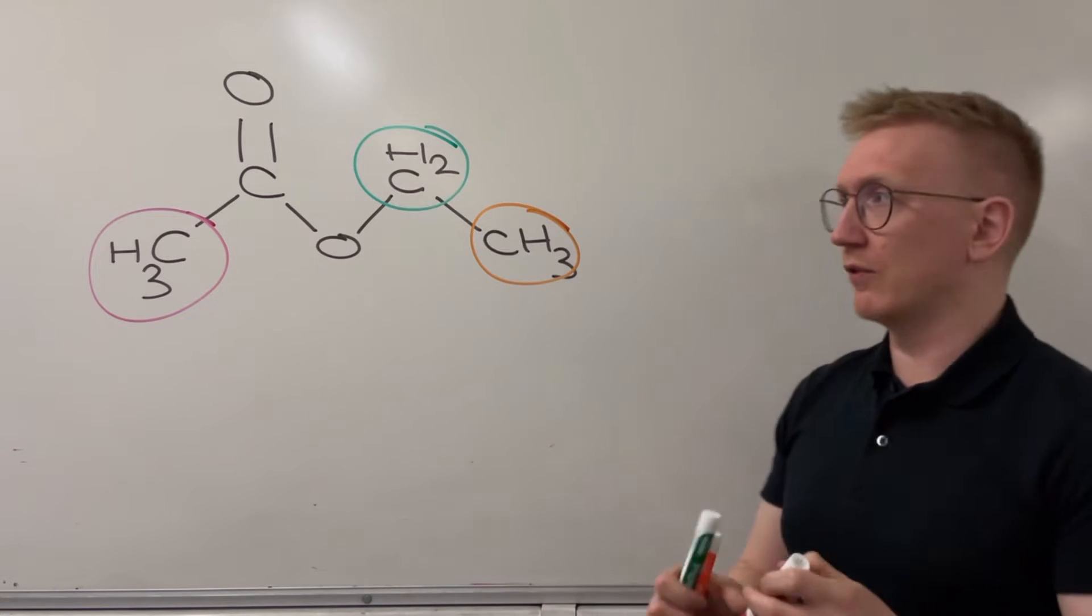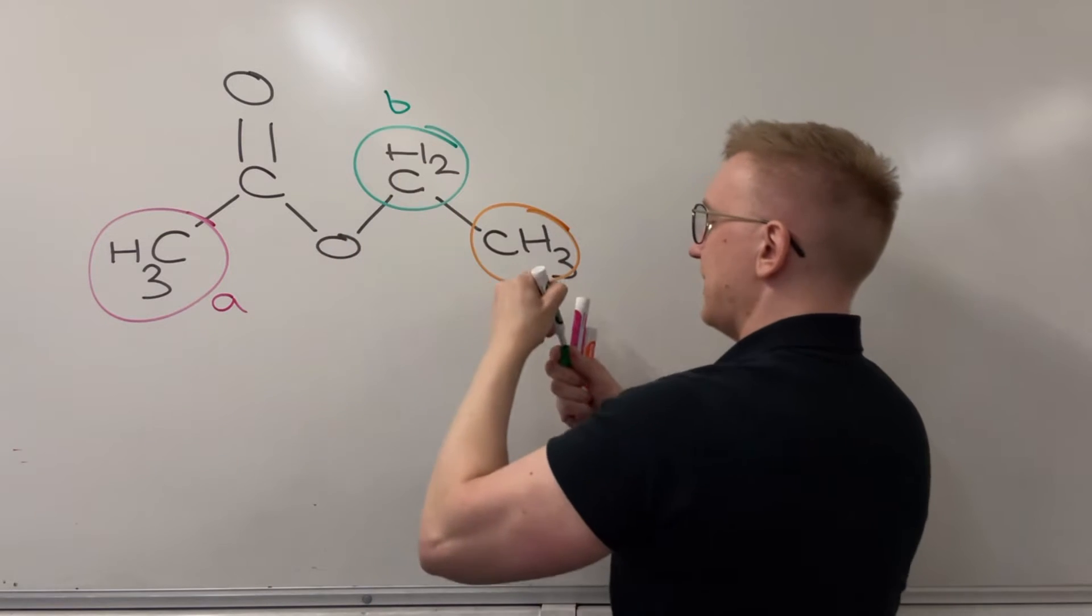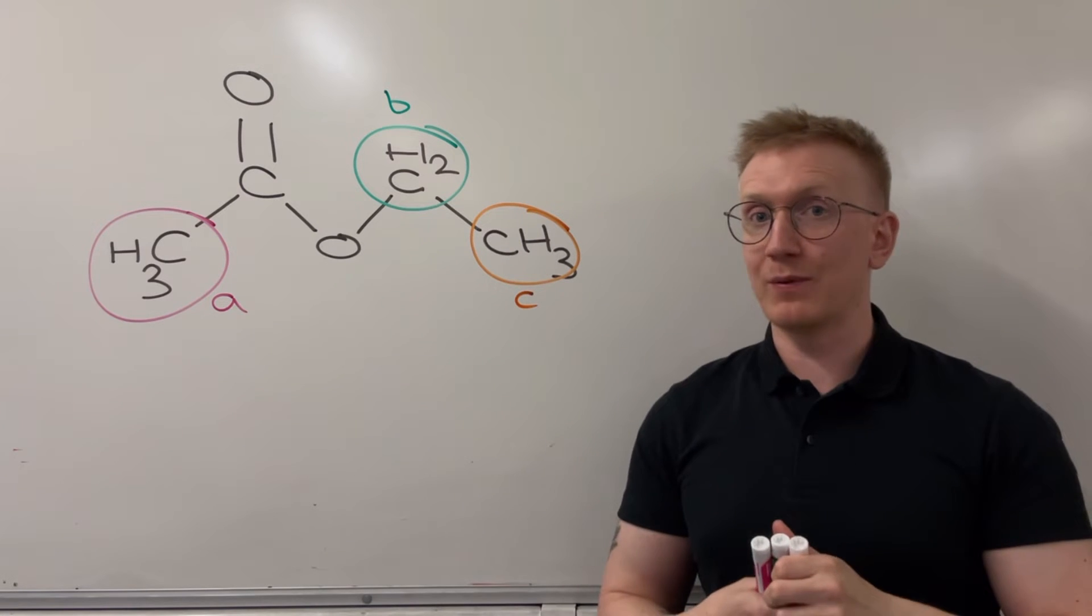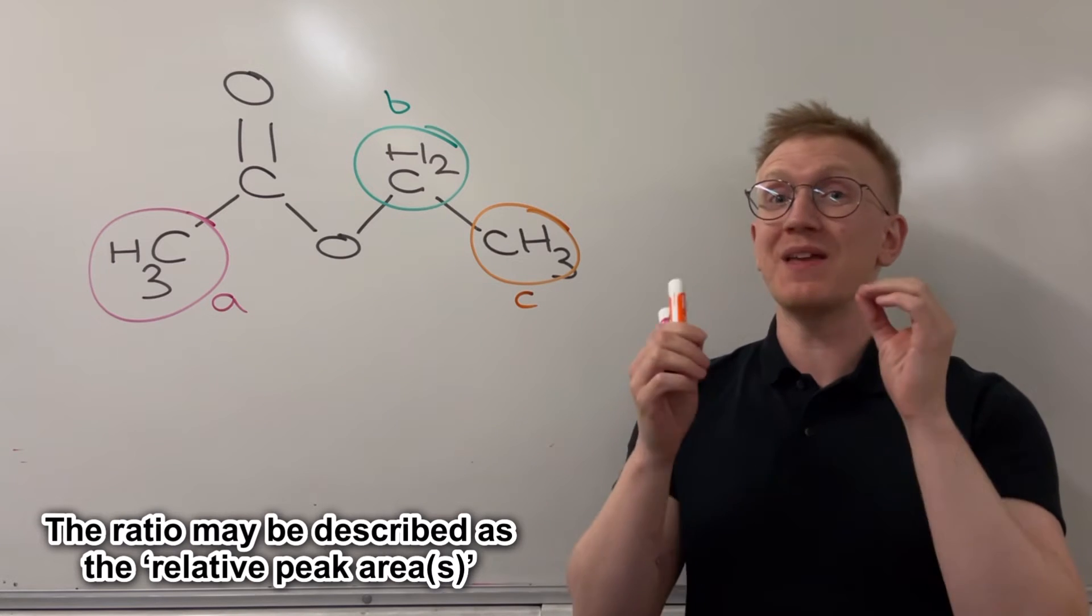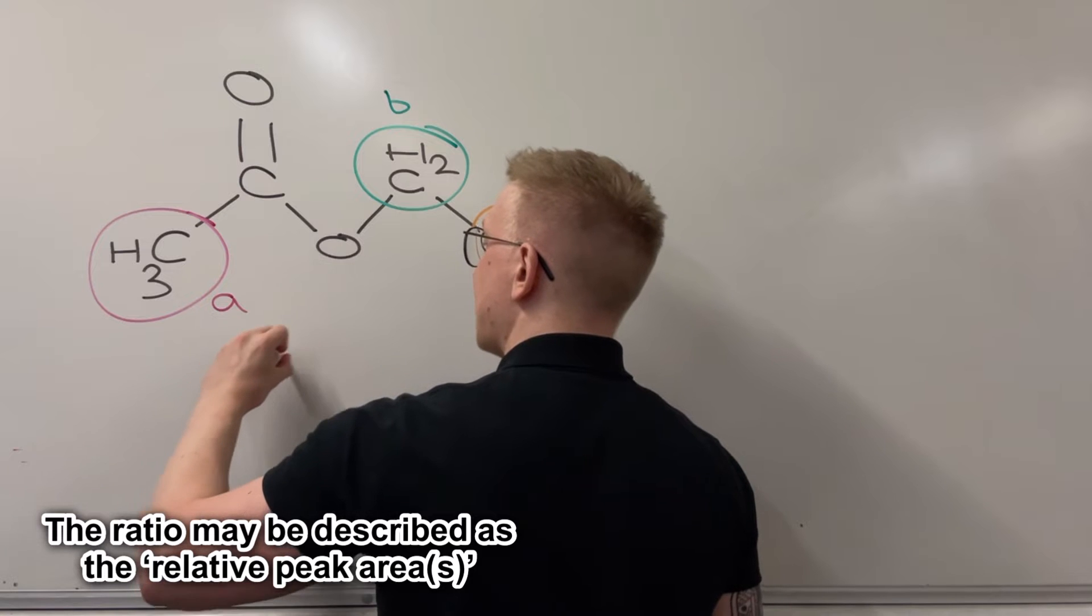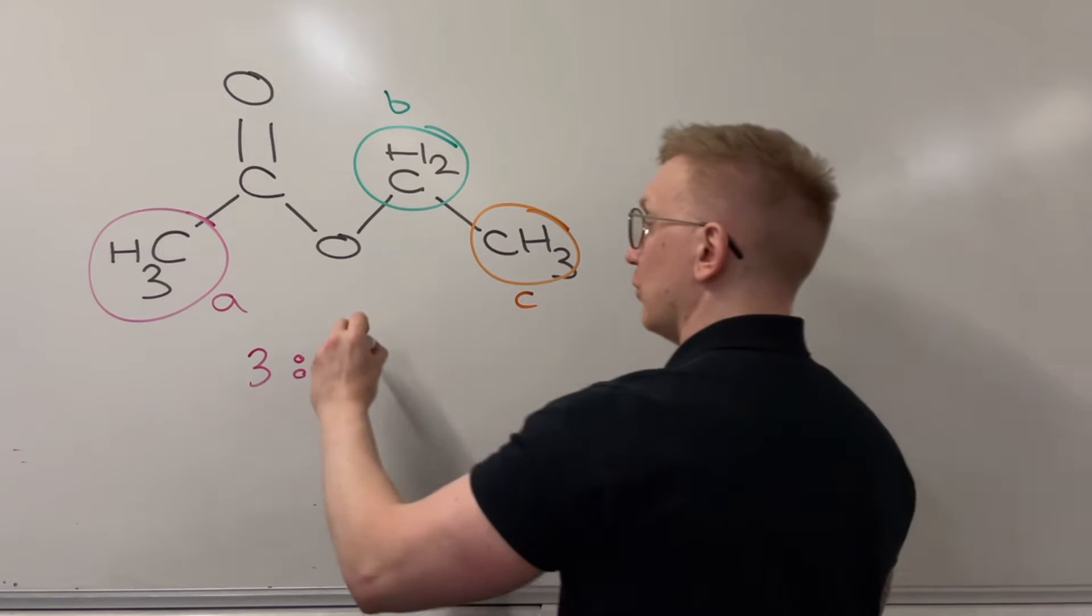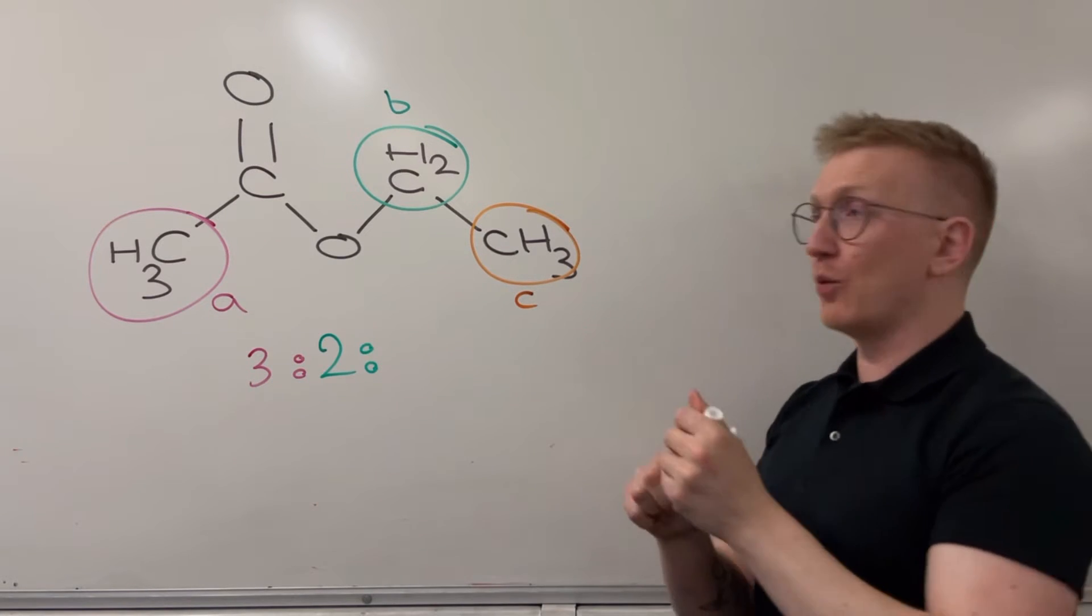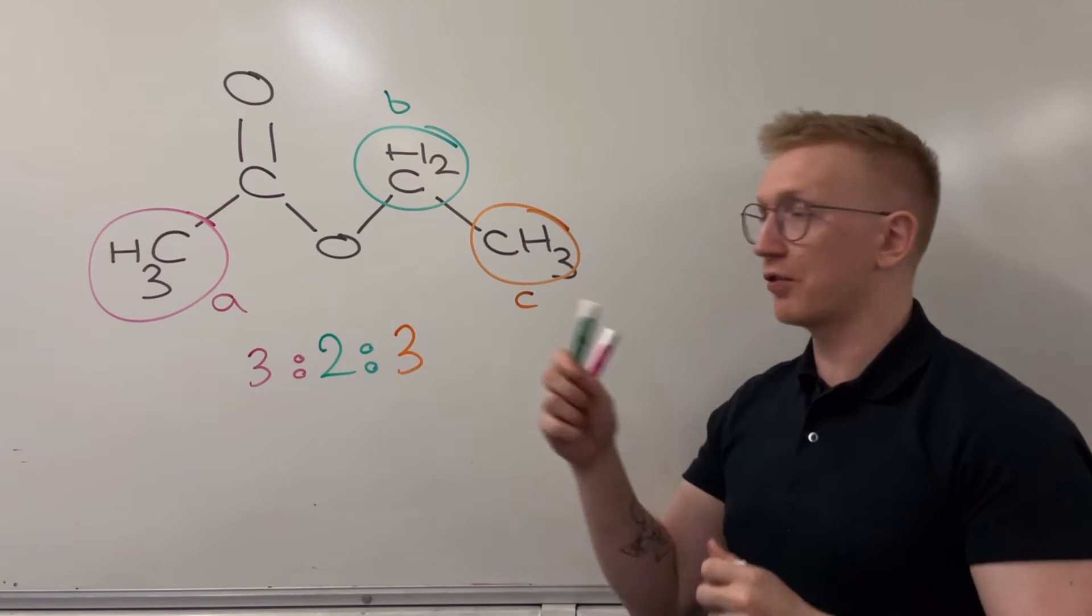So what about the ratios? Well, let's give these letters so we can talk about these in more detail. Let's say we're looking at peaks A, B and C just here. What's the ratio going to be like between these peaks? Well, we look at the number of hydrogens that are within each environment. And so at A level, we would say that our peaks here are going to be in a 3, because there are three hydrogens in that CH3 group, to 2, because we've got this CH2. And then finally, for this final one here, we're going to have another 3 again. So we expect to see our peaks in a 3 to 2 to 3 ratio.